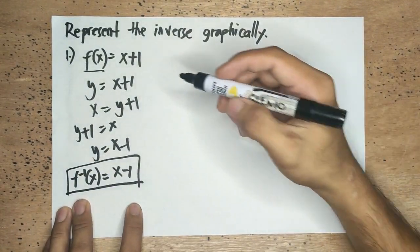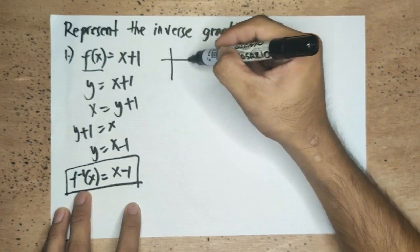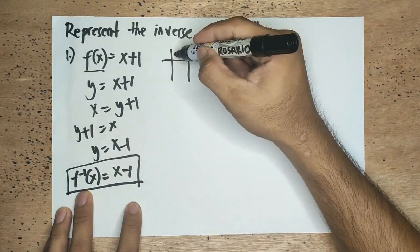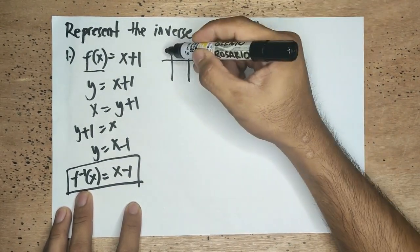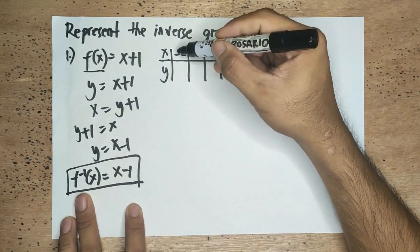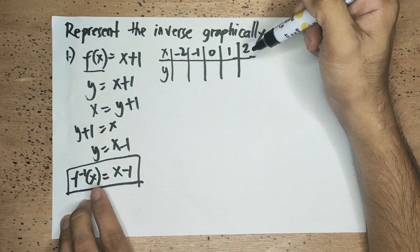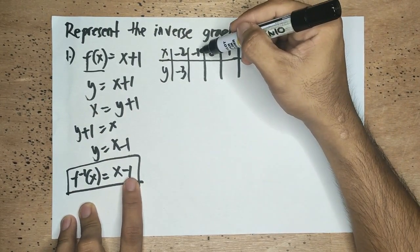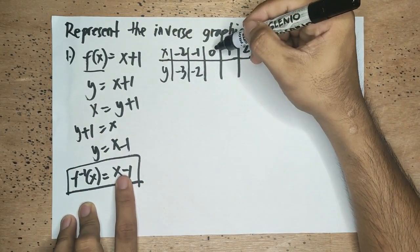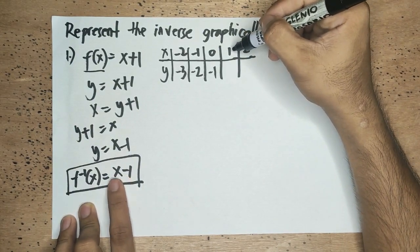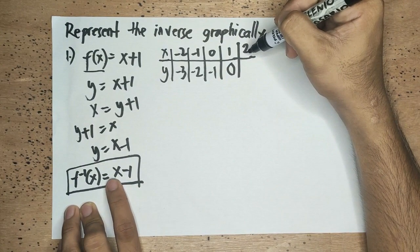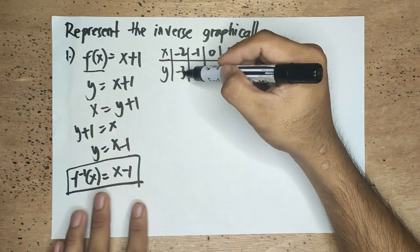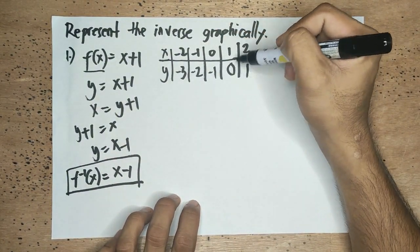Next, we represent the inverse using a table of values with domain negative two, negative one, zero, one, and two. Substituting each value into f⁻¹(x) = x − 1: if x = −2, y = −3; if x = −1, y = −2; if x = 0, y = −1; if x = 1, y = 0; if x = 2, y = 1. So our coordinates are (−2, −3), (−1, −2), (0, −1), (1, 0), and (2, 1).